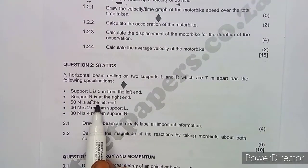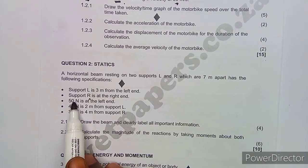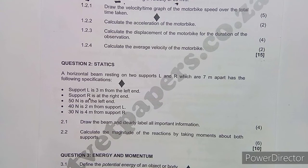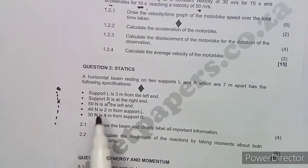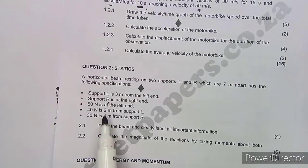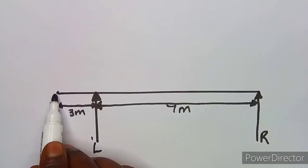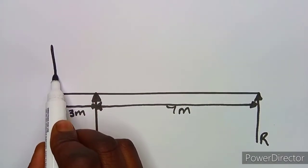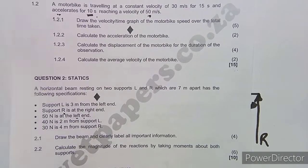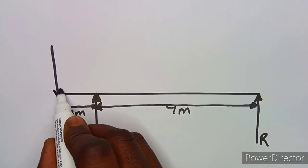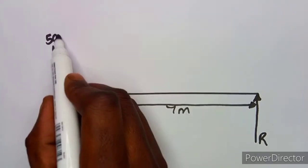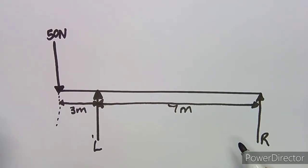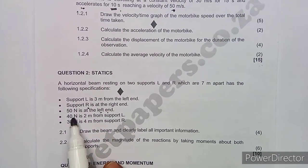The 50-newton force is at the left end. This is not a support — it's a point load. A point load always faces downwards. So we draw a downward-pointing arrow of 50 newtons at the left end of the beam.